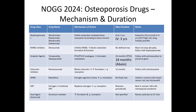Next is the sclerostin inhibitor class — romosozumab — the latest in osteoporosis medications. It blocks sclerostin, increasing bone formation and decreasing resorption. The maximum recommended treatment duration is 12 months, and it should also be followed with anti-resorptive therapy to preserve BMD gains. Then there is the SERM class — raloxifene — an estrogen agonist in bone that decreases resorption, with no fixed maximum duration. It is useful in women with breast cancer risk but offers less benefit for hip BMD.